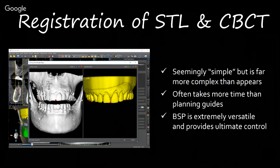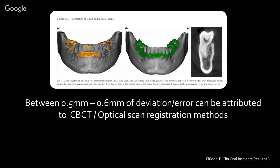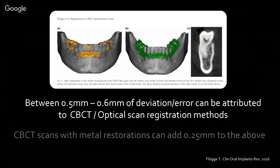As I discussed last year during my webinar on avoiding rookie mistakes, one critical issue is misalignment of your optical scan or secondary scan to your patient scan. The research shows that between 0.5mm and 0.6mm of error in implant position can be attributed to misalignment. Additionally, patients with extensive metal-based restorations can add a quarter millimeter to that number.